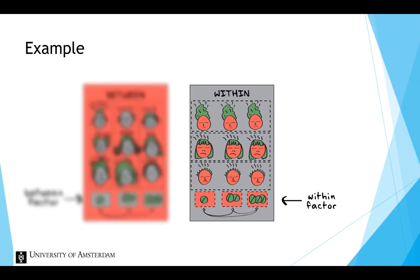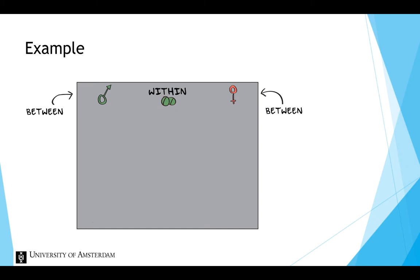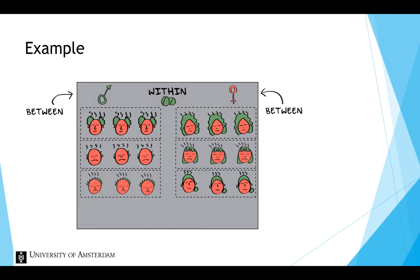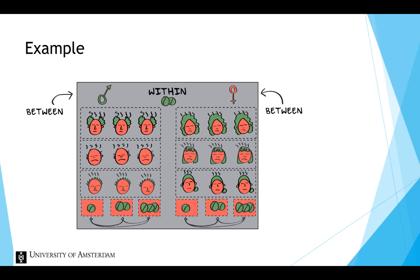In a repeated measures design, within-factors can be combined with other within-factors or between-factors. In addition to the within-factor dosage, we could investigate the between-factor gender. So a group of men is exposed to all three dosages, and a group of women is exposed to all three dosages. Now we can investigate if a higher dosage is more effective for one of the two groups.